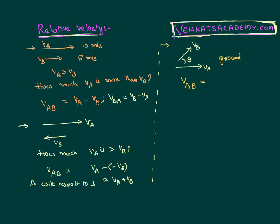So I would like to say ground is common for both A and B. So what I will write is relative velocity of the A with respect to B is relative velocity of the A with respect to ground plus relative velocity of the ground with respect to B.